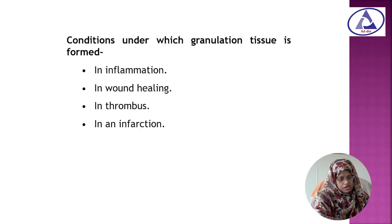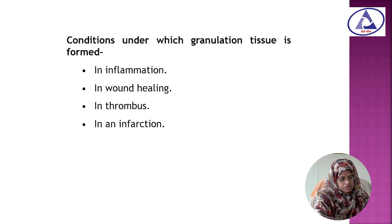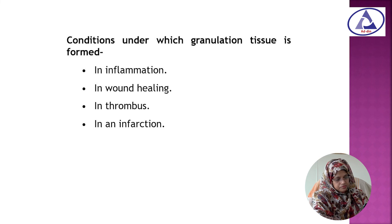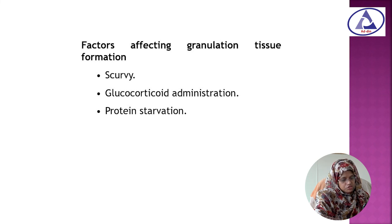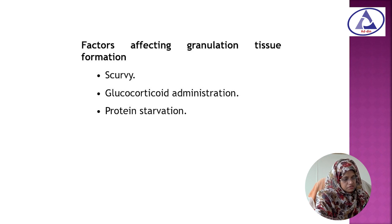Now, what are the conditions under which granulation tissue is formed? Granulation tissue is formed in inflammation, in wound healing, in thrombus, and in infarction. The factors affecting granulation tissue formation are scurvy, glucocorticoid administration, and protein starvation.